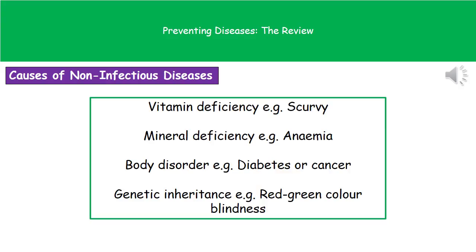The second cause is a deficiency of minerals — for example, anemia, which is caused by a lack of iron in your diet. There are also body disorders such as diabetes or cancer, and finally inherited diseases caused by your own genes, such as red-green colour blindness.